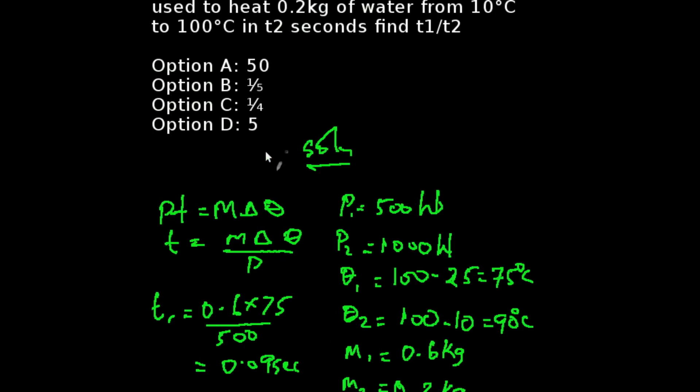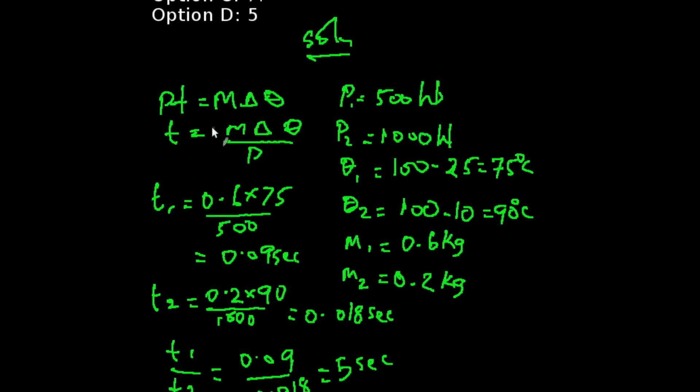The correct answer to this question is option D, which is 5. Let's look at how we got that. We're going to be using the formula PT, that is power times time equals mass times change in temperature. So making T our subject of formula, we're going to be having T equals M change in theta all over P, where we have our parameters given here.